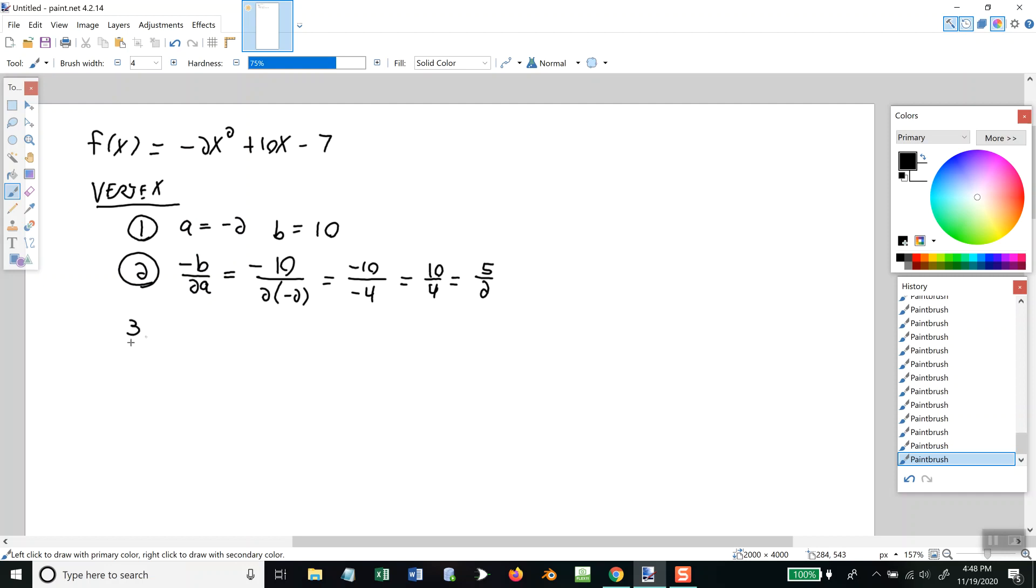Step three. By the way, this right here on step two is the x part of my vertex. We'll come back to that. Step three, plug the value that you just found in step two into your function. So, we're going to find f(5/2). Everywhere I have an x, I'll plug in 5/2. So, I got -2(5/2)² + 10(5/2) - 7.